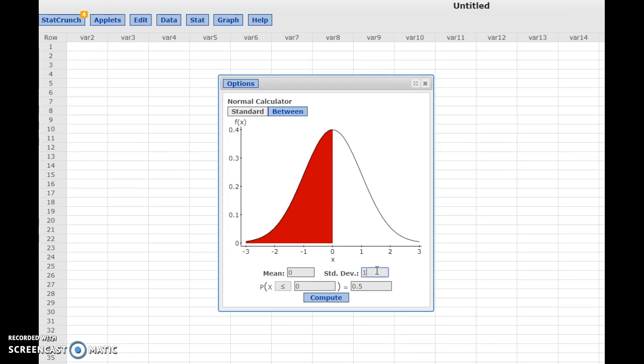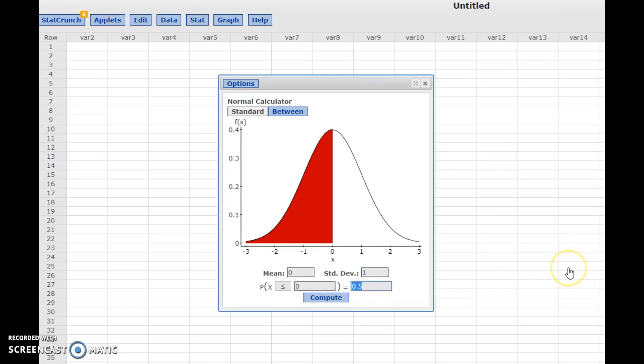From here you can find areas under the curve or you can find data values that are associated with provided areas. For example, if I'm given that the area to the left on the curve is 0.7, I can type that area of 0.7 here and click Compute.